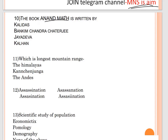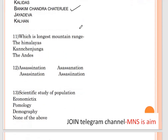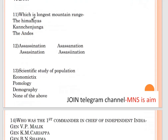Question number ten: a famous book — options are Kalidas, Bankim Chandra Chatterjee, Jai Deva, and Kalhan. The correct answer is Bankim Chandra Chatterjee. Question number eleven: which is the longest mountain range? Options are the Himalayas, Kanchenjunga, and the Andes. The correct answer is the Andes. Kanchenjunga is located in Sikkim.